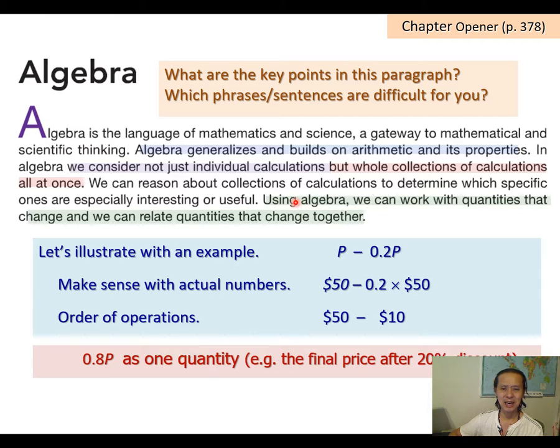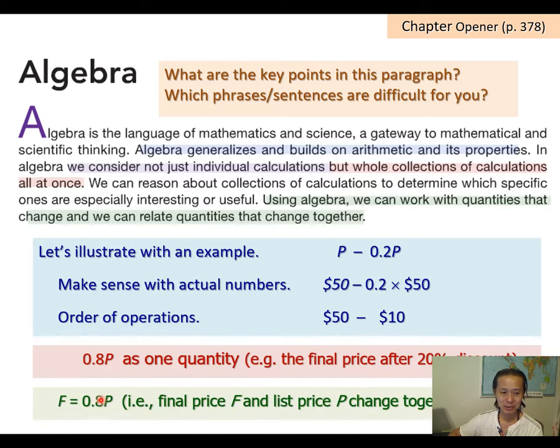The next sentence says, using algebra, we can work with quantities that change and we can relate quantities that change together. What does that mean? So here I only have P. Maybe I need a second quantity. So let's call the second quantity final price. So F is equal to 0.8P. So now we have a final price and we have a list price, the original price. So we can see that if my P changes, my F will change accordingly.